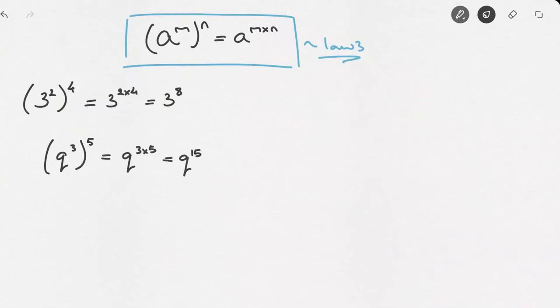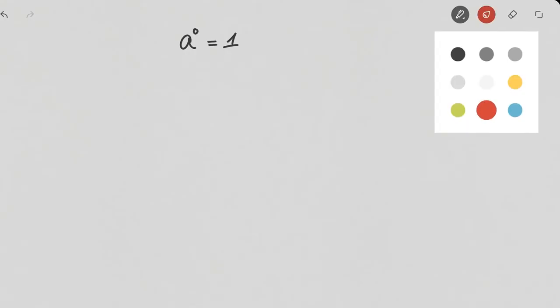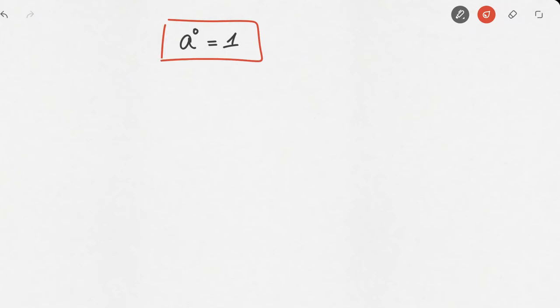Now there's one more law: a raised to the power of 0, where a is a non-zero number, will always equal 1. I'll box that as well. This is a special case because it's a very common mistake to think that a number raised to the power of 0 equals 0 — it doesn't. A raised to the power of 0 will always equal 1.